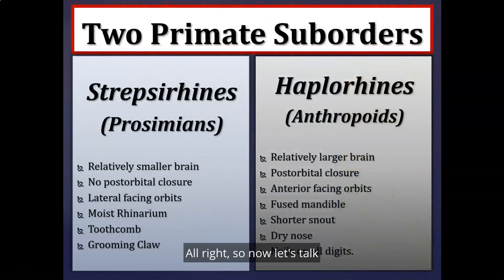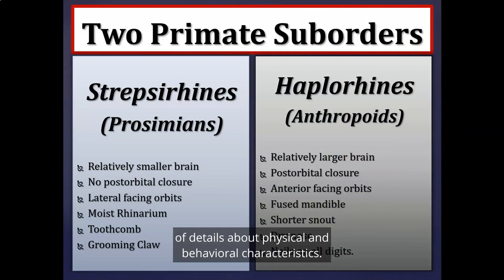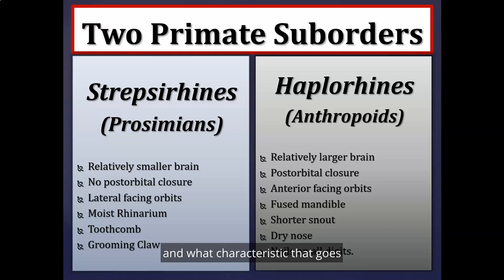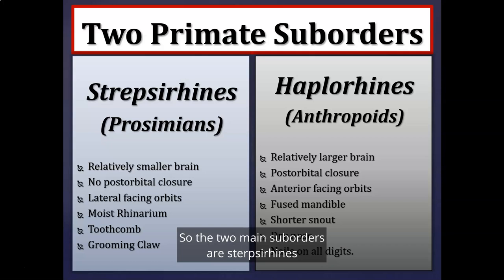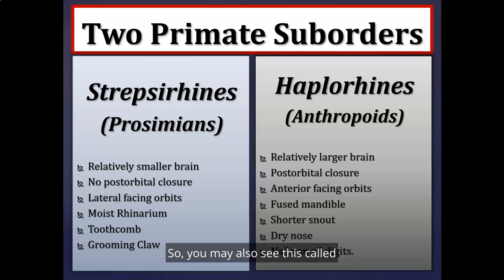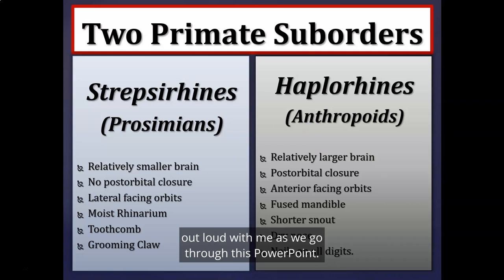Now let's talk about how we divide the primate order. This chapter has many details about physical and behavioral characteristics, and check-in assignment number four will practice classifying those characteristics by primate division. The two main suborders are strepsirhines and haplorhines — also called prosimians and anthropoids.